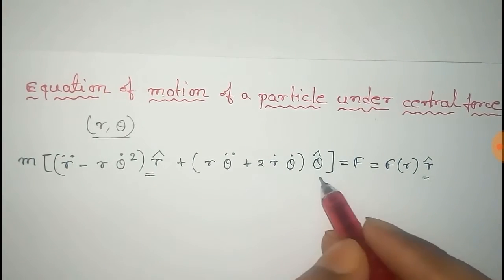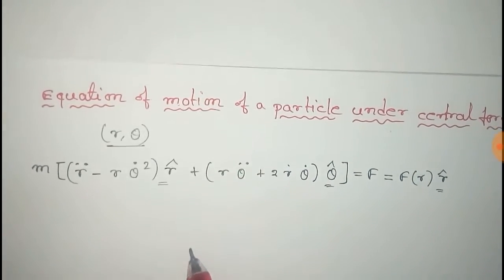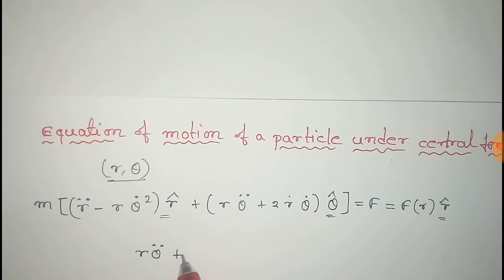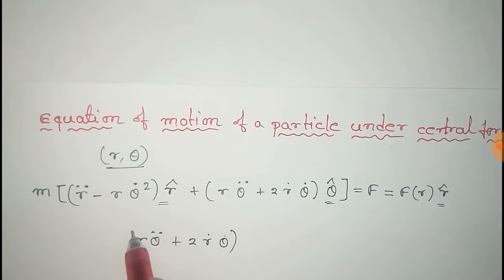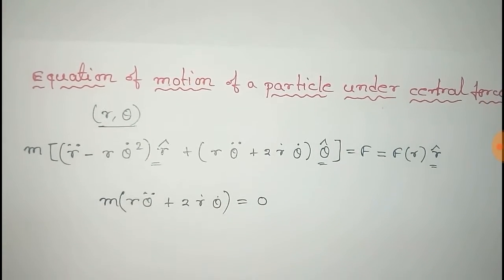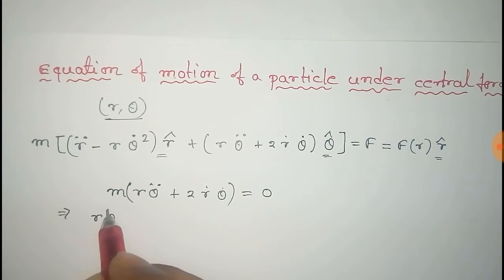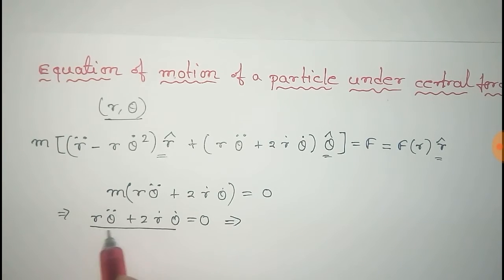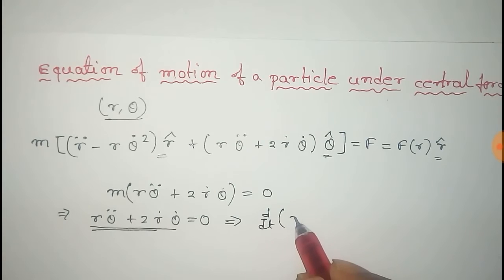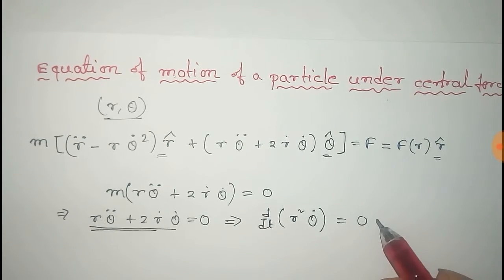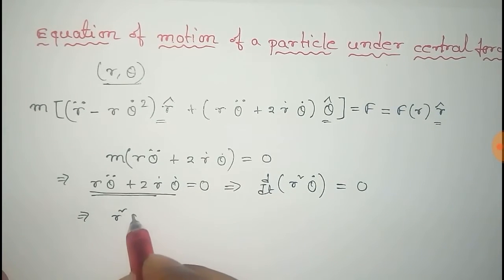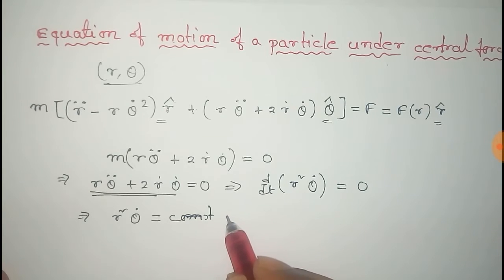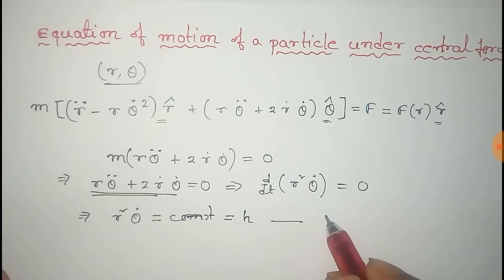Now we compare the radial and angular components on both sides. Taking the angular components first: the angular component on the left side is R Theta double dot plus twice R dot Theta dot, and the right side equals zero. We can write this term as d/dt of R squared Theta dot equals zero. From this, R squared Theta dot equals a constant, which we take as H. We label this as equation number one.